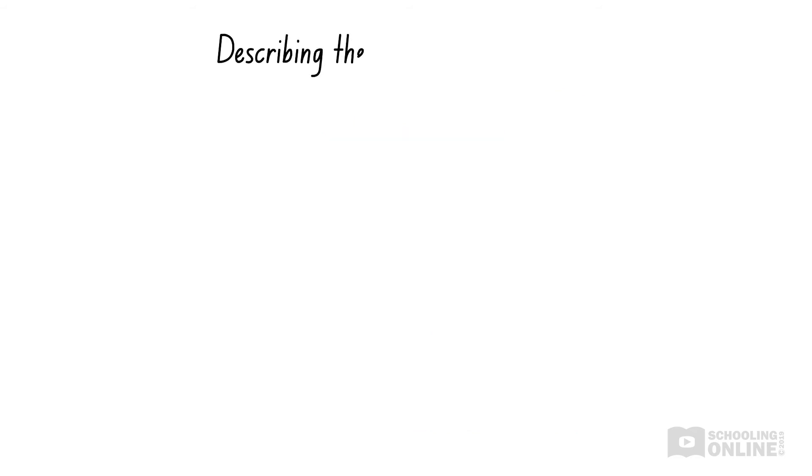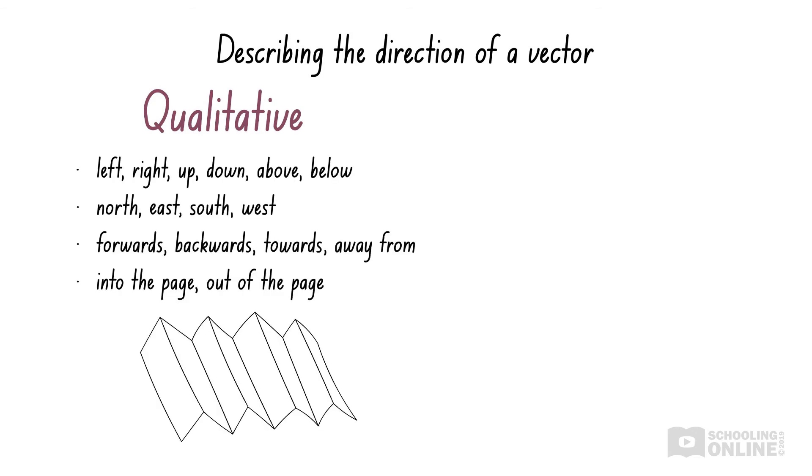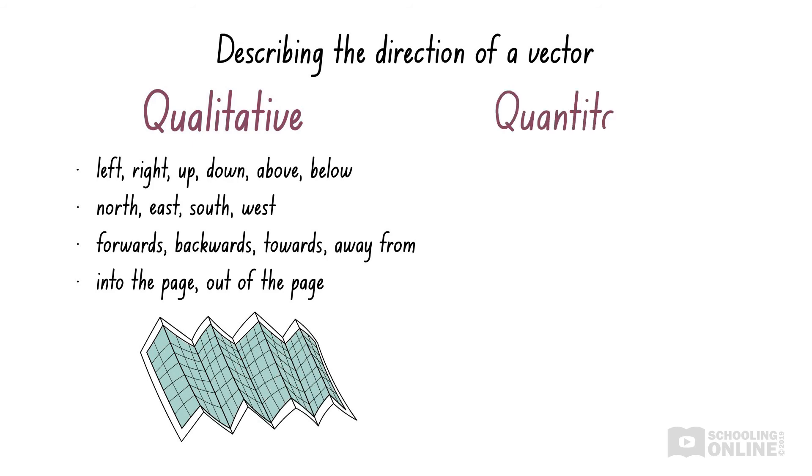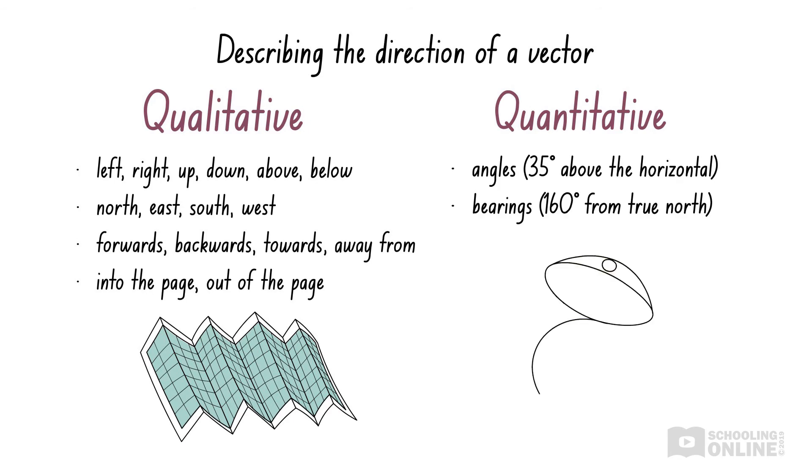In physics, there are many ways to indicate direction. Sometimes we can use descriptive words such as left, right, up and down. Other times, when we need to be accurate, we can use angles or bearings. For example, we could specify a bearing of 160 degrees. Pause the video here if you would like to read through all the examples we've provided.